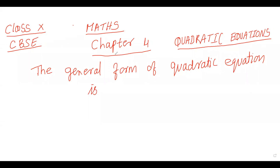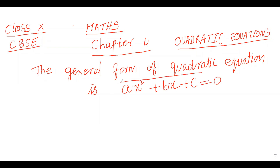Class 10 CBSE Maths Chapter 4: Quadratic Equations. The general form of a quadratic equation is ax² + bx + c = 0. We call it an equation because it is equated to something — it is equated to 0. If there is no equal sign, then we call it a quadratic polynomial.